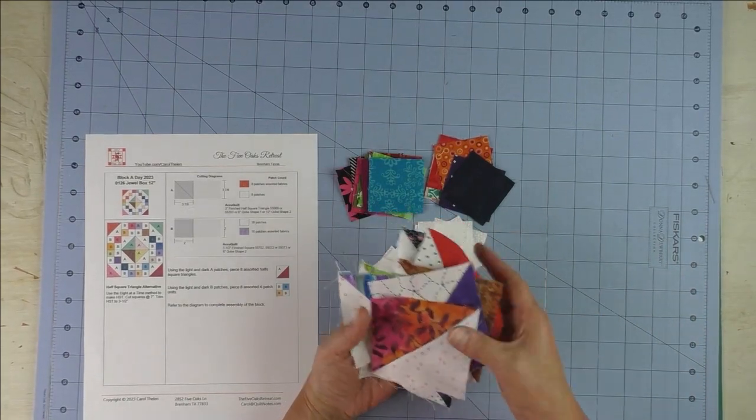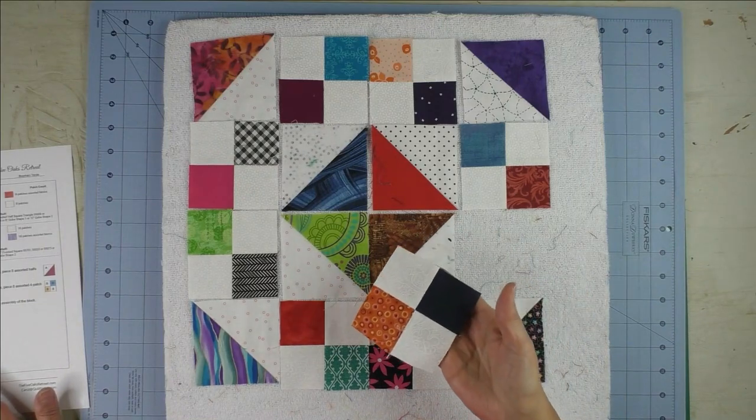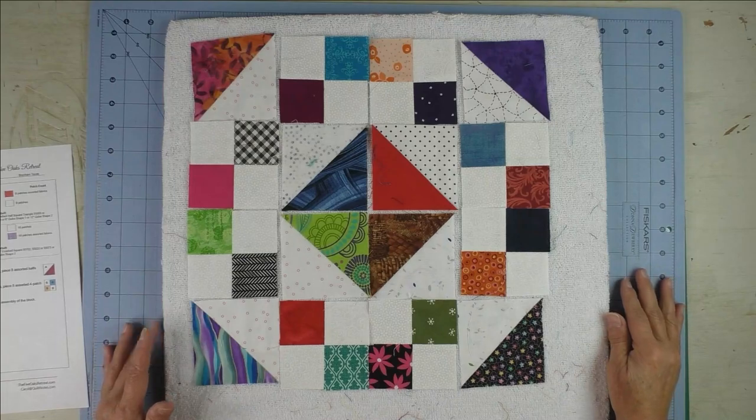Since the half square triangles are already made, all I need to do is make my four patch units. Now all my four patches are finished and I've got the block laid out how I like it. I wanted to tell you something before we go on.